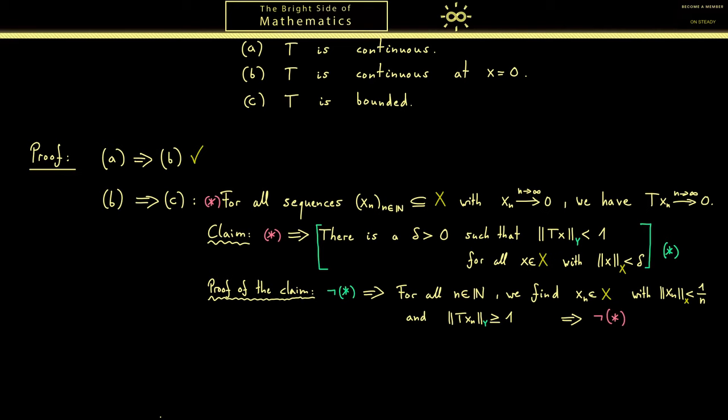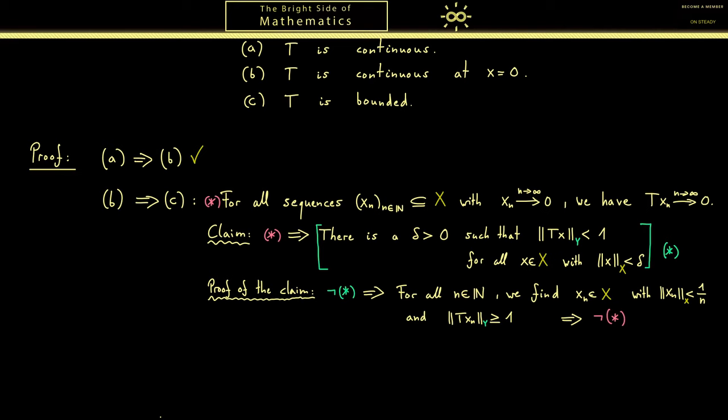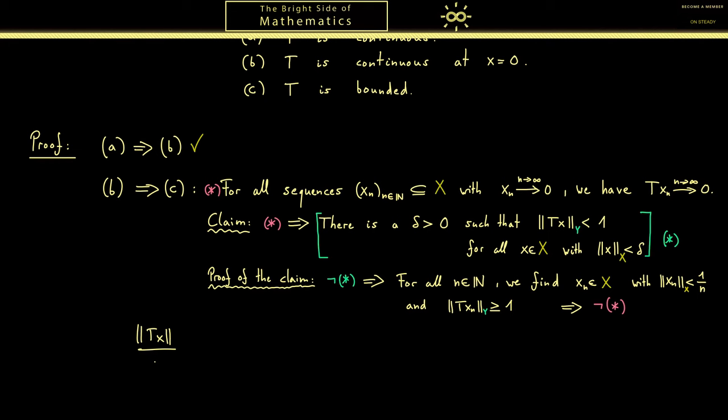We recall that we want to calculate the quotient of the norm of Tx divided by the norm of x. However at the moment we can only say something about the vectors x that have length less than δ. Of course this is something we can use here because we could multiply with δ half, which is less than δ, times 1 over the norm of x. So why do we do that? Simply because with that factor we can scale the length of the vector x.